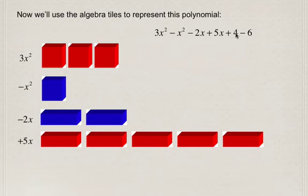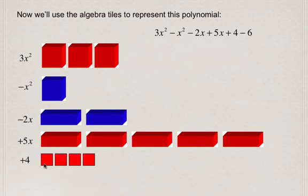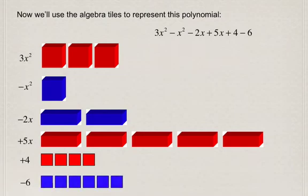For the next term, plus 4, we use four red squares, and each of these represents positive 1. And for minus 6, we use six blue squares, and each of these represents negative 1.